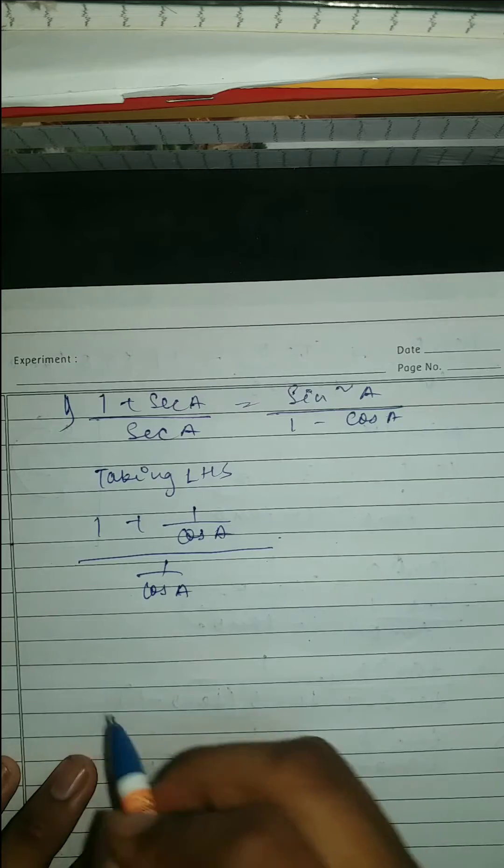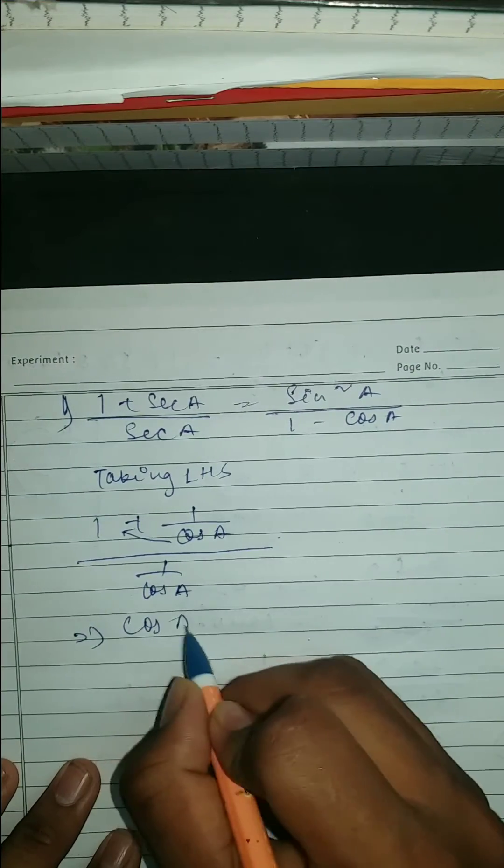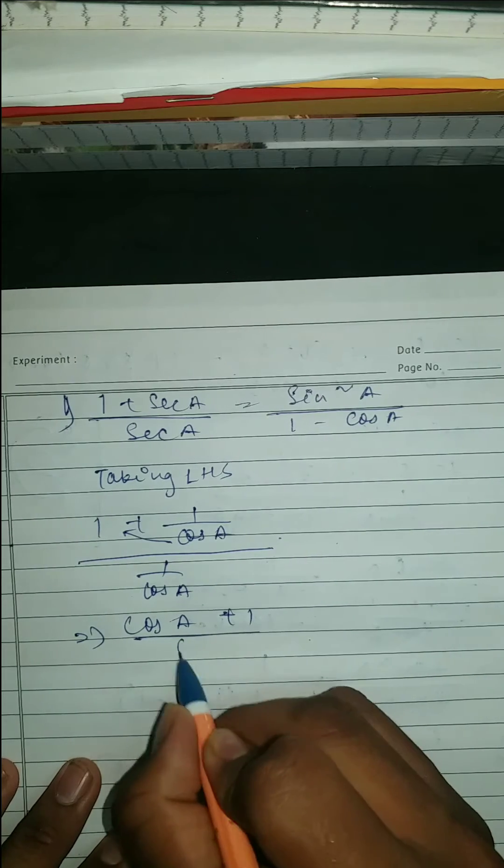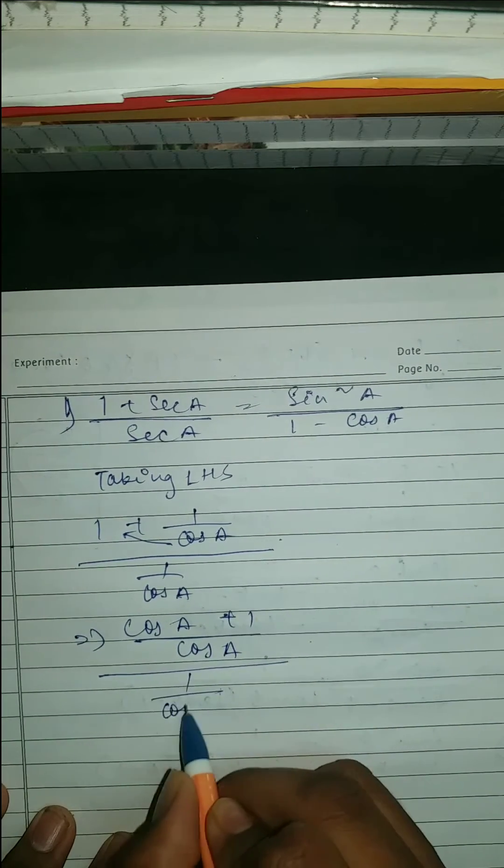Now here, look, it should be your cos A plus 1 upon cos A upon 1 upon cos A.